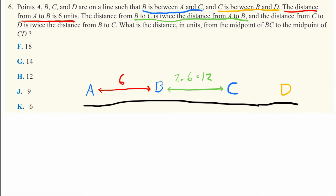And the distance from C to D is twice the distance from B to C. So the distance from B to C is 12. This distance must be 12 times 2. That's twice. 12 times 2, which is equal to 24. And that's this distance here.